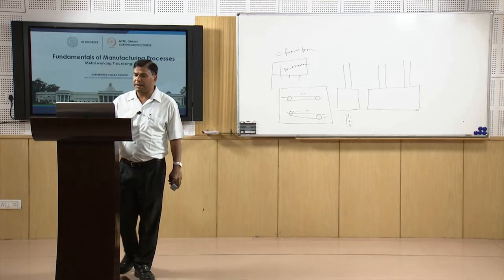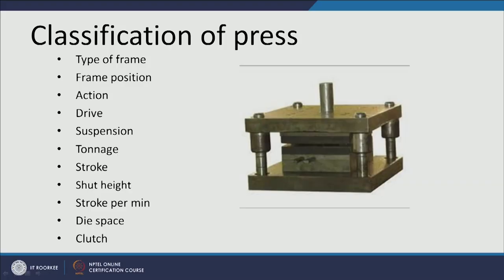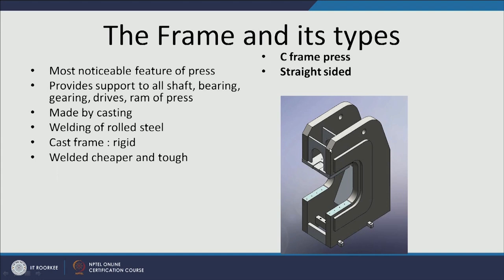Tonnage is the maximum force the press can apply; stroke is the distance traveled by the ram from top to bottom; shut height is the gap at the lowermost position; and die space determines the maximum area available for the die. The frame is the main part of the press taking all forces and housing components like shafts, bearings, drives, and rams. Frames can be made either by casting or by welding of rolled steels.